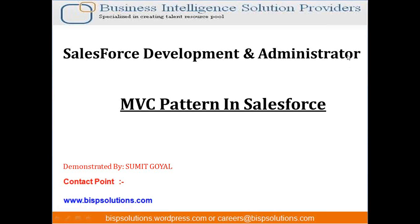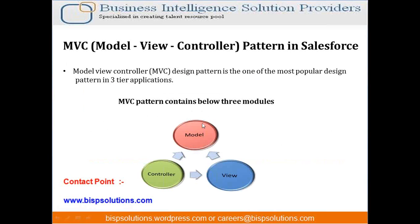MVC stands for Model, View, and Controller — M for Model, C for Controller, and V stands for View Pages. As you can see here, it is one of the most popular design patterns in a 3-tier architecture.